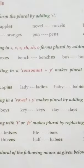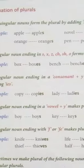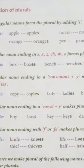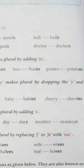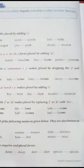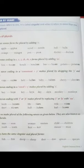Rule 1: Most singular nouns form the plural by adding s. Most singular nouns jab hum plural mein convert karna chahte hai, toh we simply add s to the noun. Like apple becomes apples, orange becomes oranges, novel becomes novels, pen becomes pens, ball becomes balls, doctor becomes doctors. In sare words mein jab inko plural mein change karna tha, toh ham ne simply s add kar diya and they have become plural.